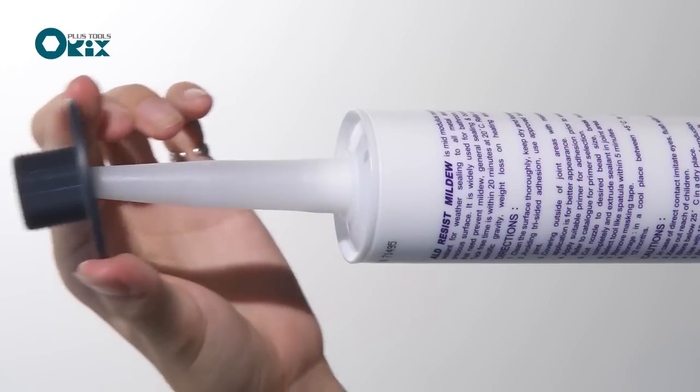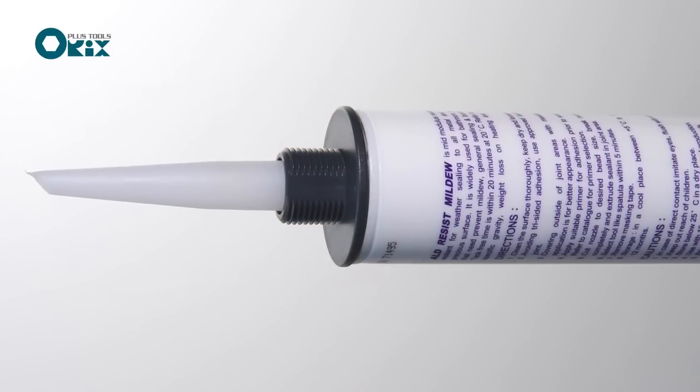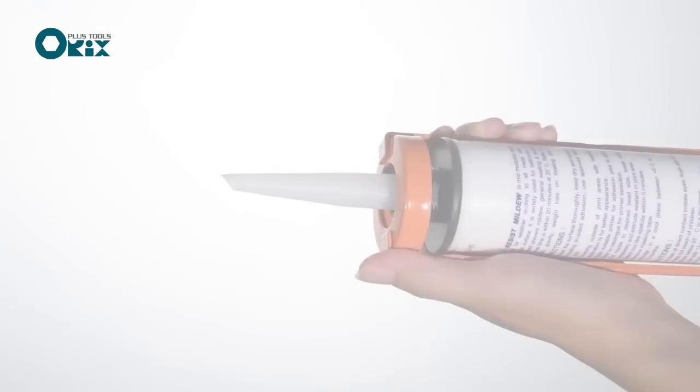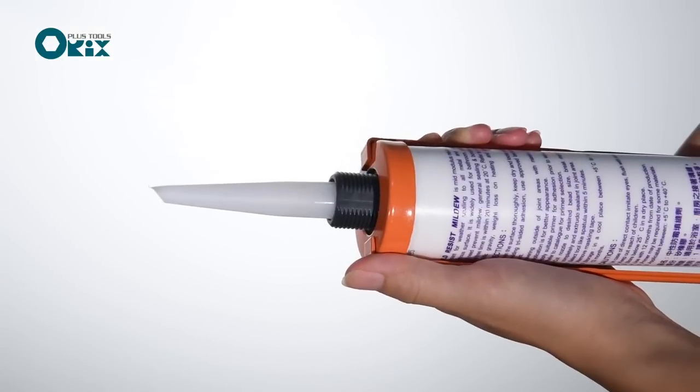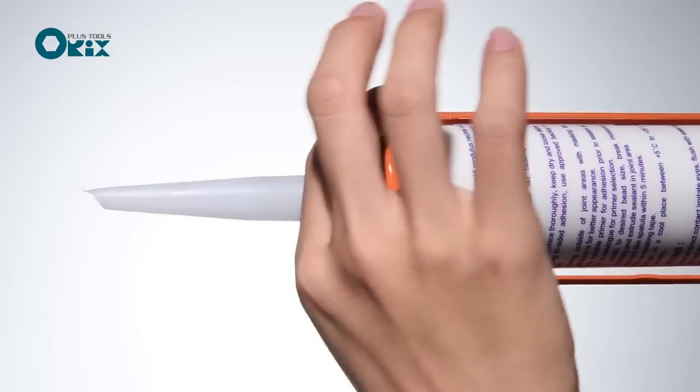Add the threaded base onto the silicone tube head and put the silicone tube into the caulking gun. Then put the holding ring on it.